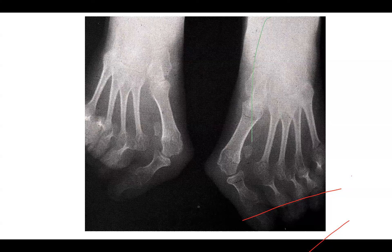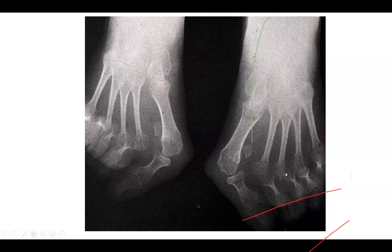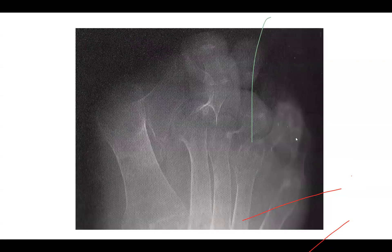Here are some foot X-rays. Here you can see the subluxation — this toe is completely gone down out of the joint. Here you can't really see where the border is between one bone and the other because they are so soft. This tissue is actually so soft you can take a needle and perforate this bone with just a stable needle.